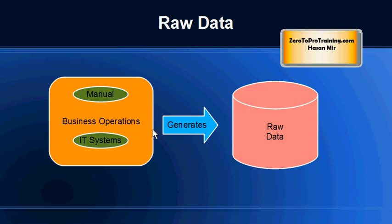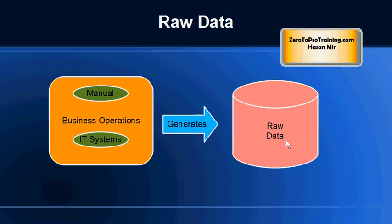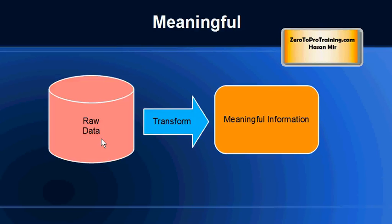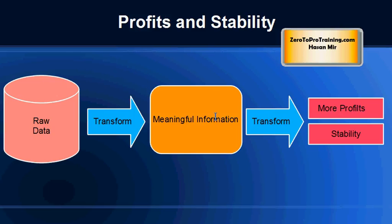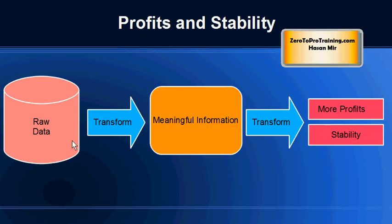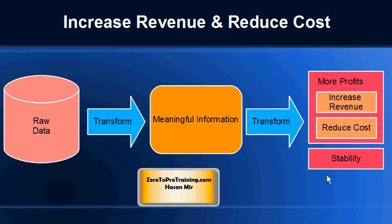When companies perform their day-to-day operations — either using IT systems like ERP (enterprise resource planning) software, other applications, or manual operations — data gets generated. Let's call this raw data. Most of this data resides in databases; some could be outside IT systems as well. This raw data needs to be analyzed to extract meaningful information, and based on this meaningful information we need to come up with strategies for the future. Making future decisions directly based on raw data is nearly impossible.